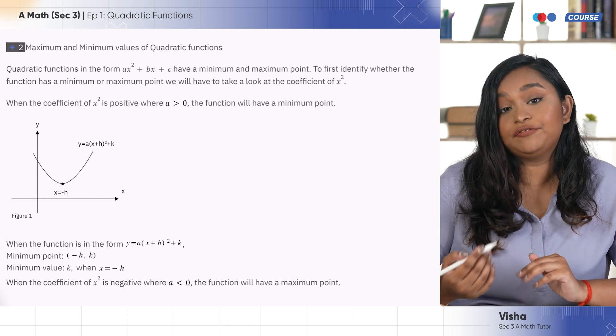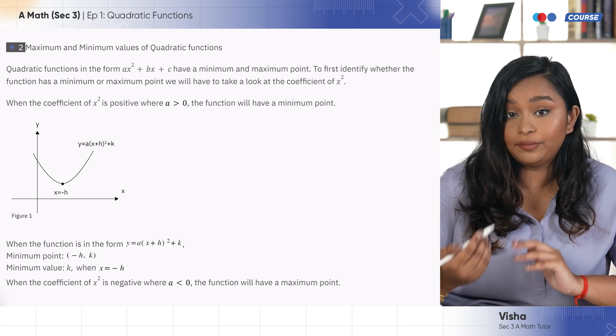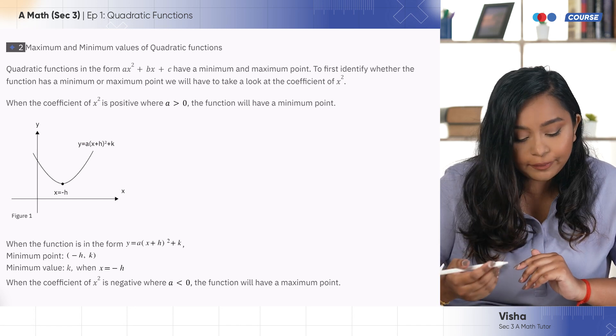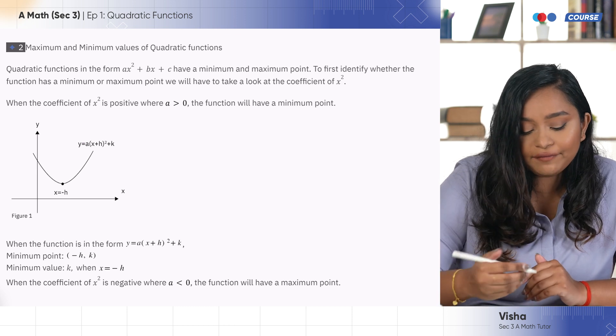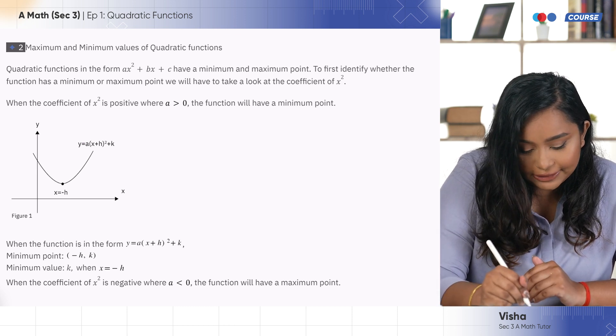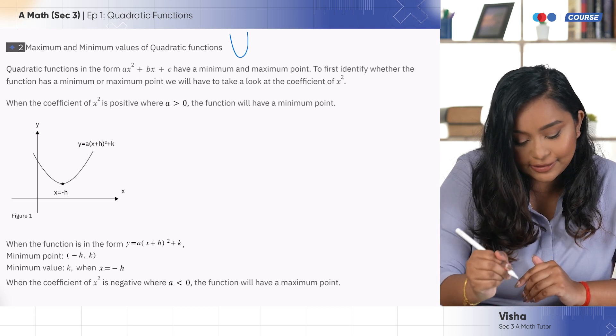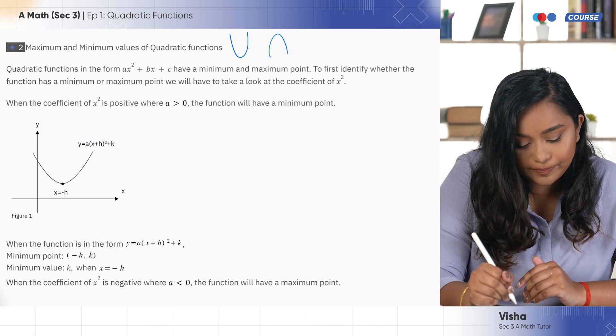When we have a quadratic function, it will be in the shape of a parabola. A parabola is basically a curve. When we have a curve, we actually have a smiley face and we have a sad face.